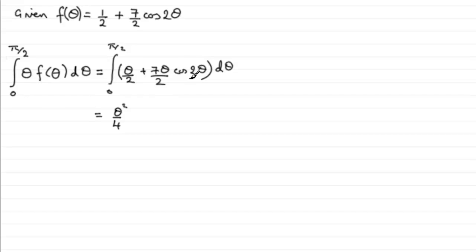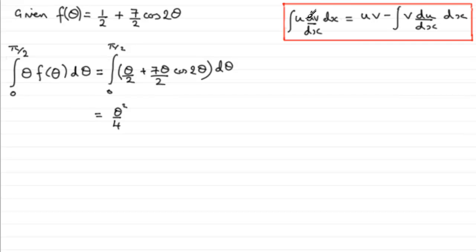And to do something like this requires integration by parts. And I'm assuming that you're familiar with integration by parts. Just as a quick reminder, this is the formula that I'm going to be using. And you normally find this in most formula books. So we have two parts. One part is u and the other part is dv dx. So we're not obviously dealing with x here, but theta.